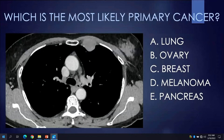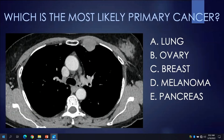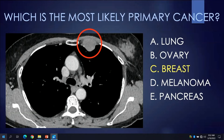Now a multiple choice question: based upon your knowledge of nodal lymphatic drainage pathways, which is the most likely primary cancer causing this enlarged left internal mammary node in a 58-year-old woman? Is it lung, ovarian, breast, melanoma, or pancreas? In this particular case, the left internal mammary nodal metastasis is from the breast. And as some of you may have noticed, there is asymmetric soft tissue in the breast, with that area representing the primary breast cancer.